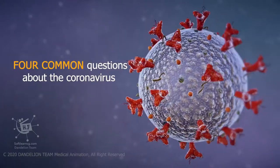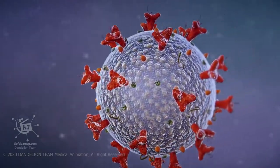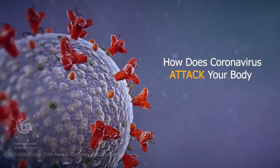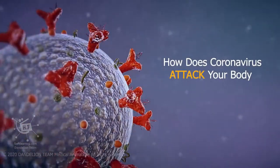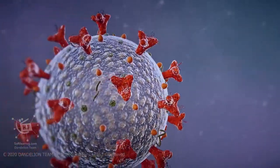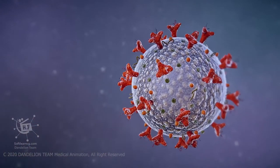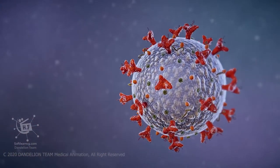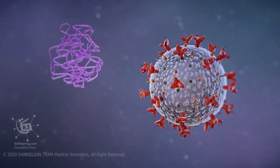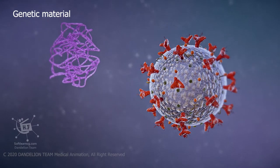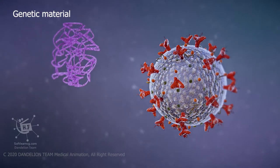Four common questions about the coronavirus. How does coronavirus attack your body? The coronavirus mostly infects living cells in order to reproduce. Inside the virus, genetic material contains the information to make more copies of itself.